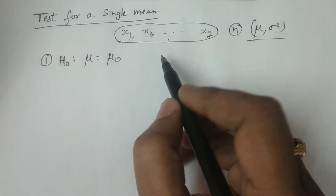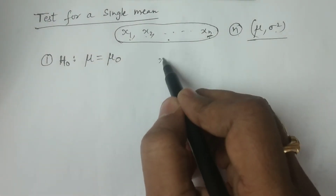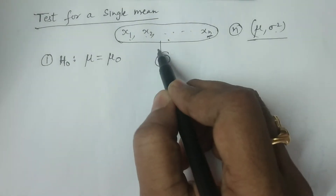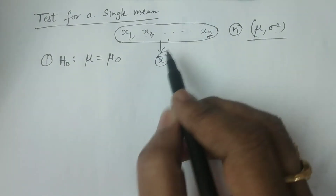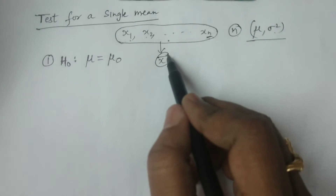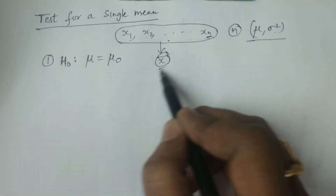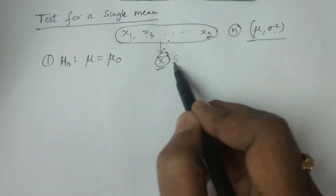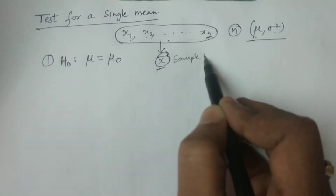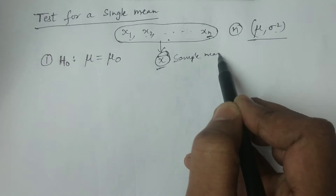Another statement for the null hypothesis: there is no significant difference between the sample mean and the population mean. What is the sample mean? It is x̄ — the mean calculated from the values x1, x2, ... xn. And the population mean is mu.